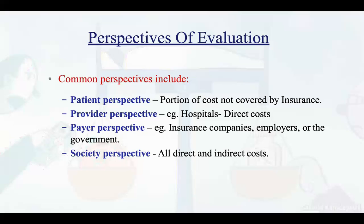The provider perspective refers to costs paid to hospitals. The payer perspective includes insurance companies, employers, or the government who pay for treatment. For example, like car insurance — if your car is damaged in an accident, the repair is paid by the insurer. Similarly, if a person has health insurance, their treatment will be reimbursed by the insurance company, or the government pays any remaining portion. Society perspective covers all direct and indirect costs paid by society.